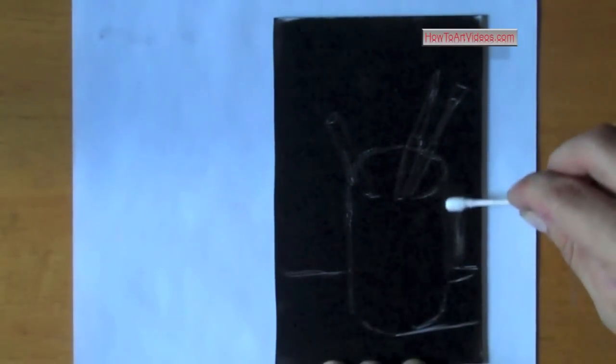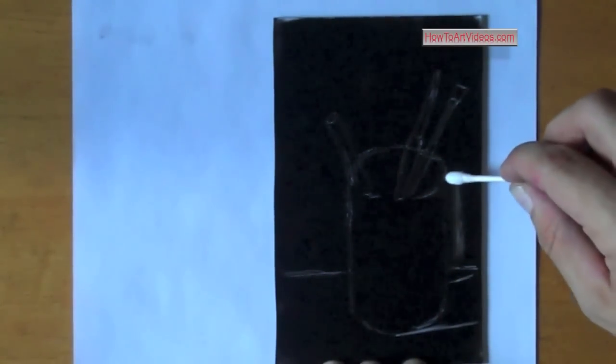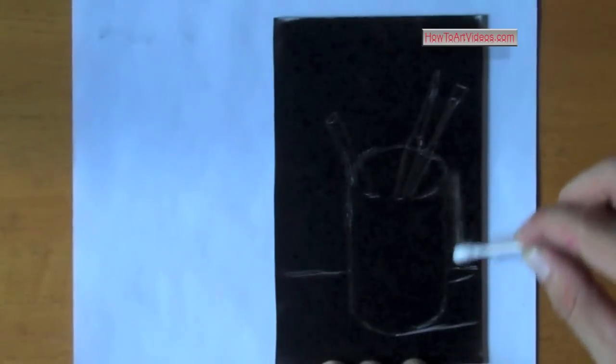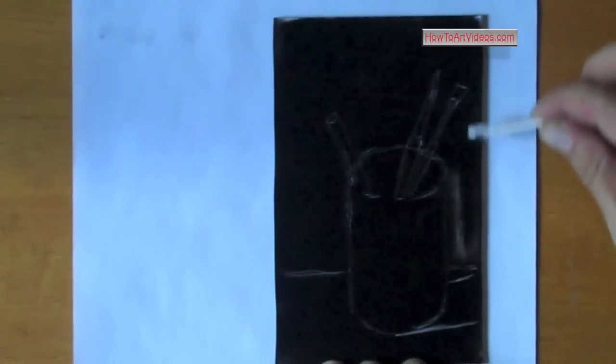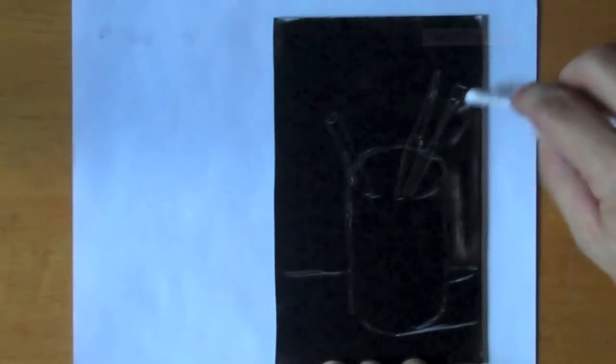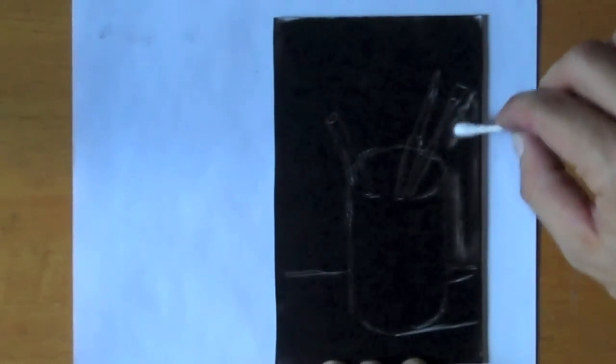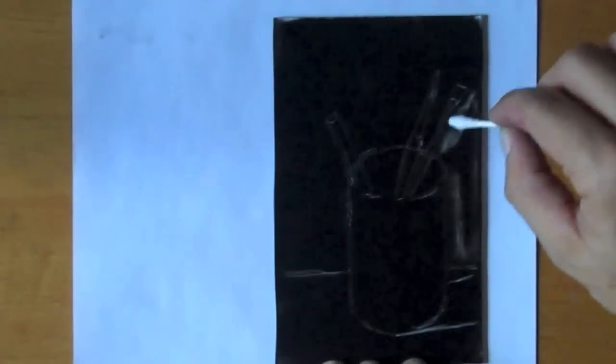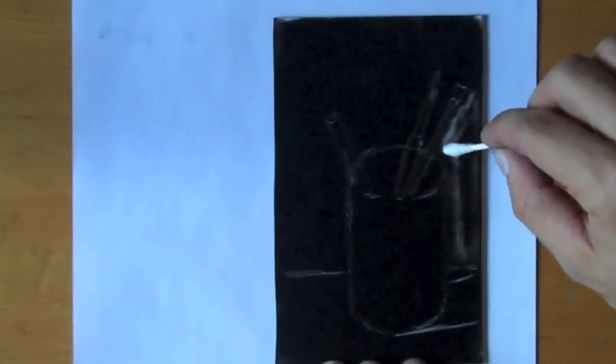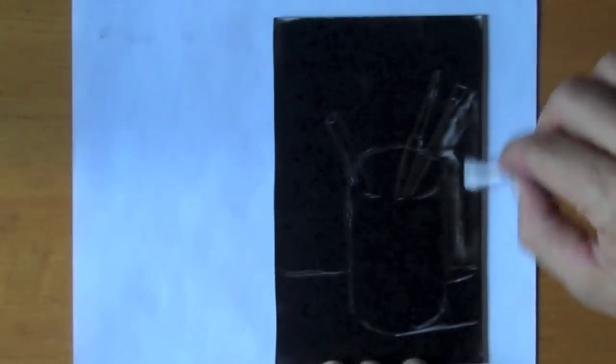You can create a range of value by controlling how much ink you wipe off the plate. Here I'm using a simple q-tip to wipe away my ink. I'll also use paper towels, but you could use rags, your finger, or any other creative way to move or manipulate the ink on the plate.